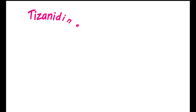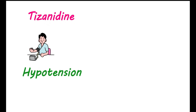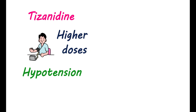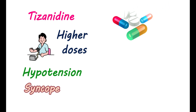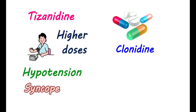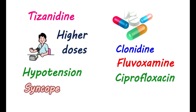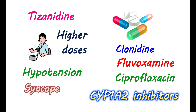Tizanidine can cause a drop in your blood pressure. Significant hypotension can be observed at higher doses, and you may feel a decrease in blood pressure when changing position — particularly from supine to upright, known as orthostatic hypotension — which may result in syncope and falling. This drop in blood pressure can be worsened by other antihypertensive medications. Never combine other alpha-adrenergic agonists like clonidine with Tizanidine. Significant hypotension can also occur when combined with fluvoxamine or ciprofloxacin, even at a single dose of 4mg. Therefore, potent CYP1A2 inhibitors like fluvoxamine and ciprofloxacin are contraindicated with Tizanidine.